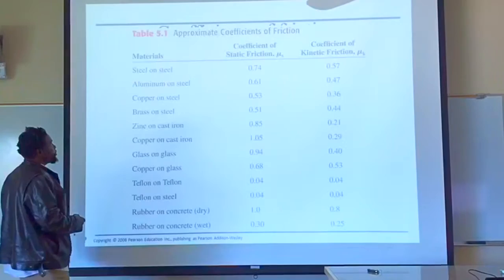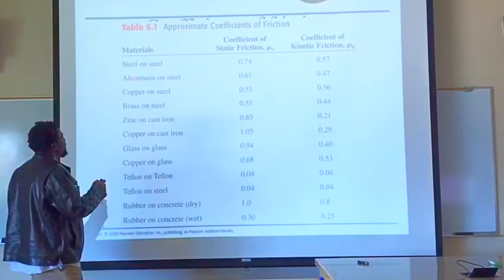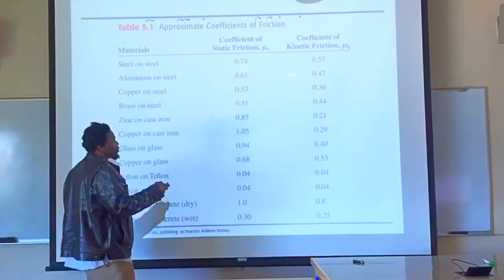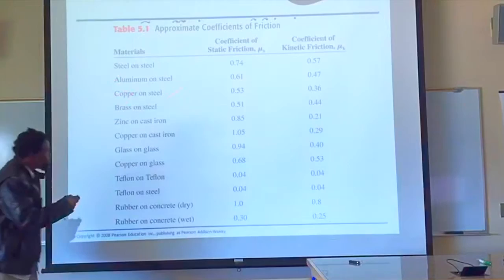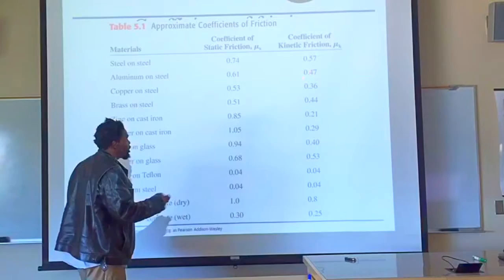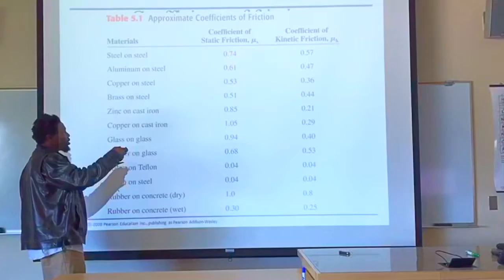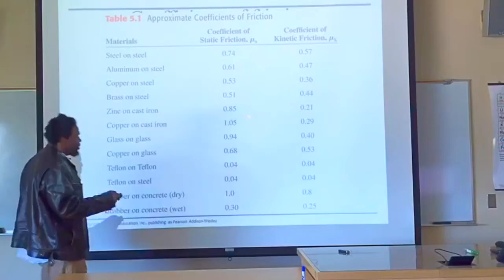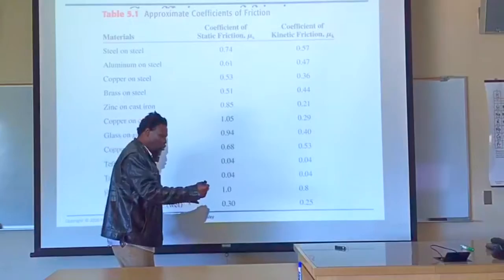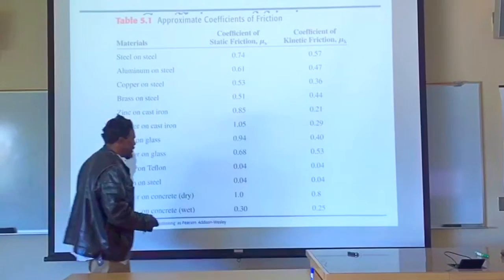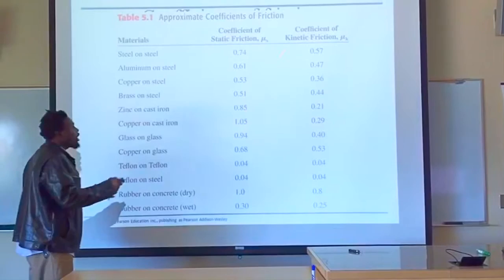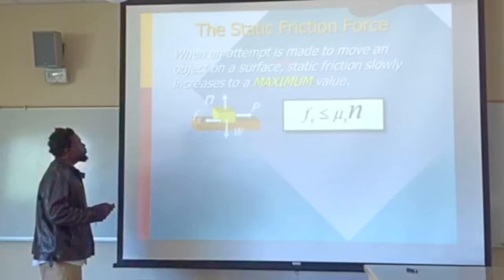Here in this table, we can see different materials acting on one another. For steel on steel, the coefficient of static friction is 0.47 and the coefficient of kinetic friction is 0.75. Aluminum on steel is 0.61, and the coefficient of kinetic friction is 0.47. Notice that every time we look at the coefficient of static friction, the coefficient of kinetic friction is always less. This suggests that the force to get something going is going to be larger than the force to keep it moving. The coefficient of static friction is a unitless quantity.